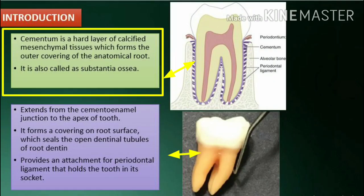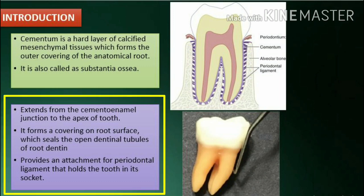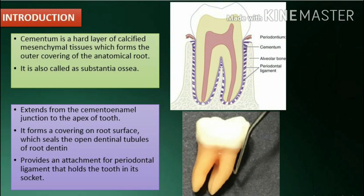Cementum is a hard layer of calcified mesenchymal tissues which forms the outer covering of the anatomical root. It is also called as substantia ocea. Cementum extends from the cementoenamel junction to the apex of tooth. It forms a covering on root surface which seals the open dentinal tubules of root dentin and provides an attachment for periodontal ligament that holds the tooth in its socket.